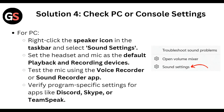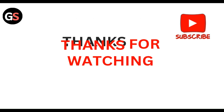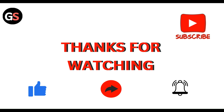Finally, check your PC and console settings. For PC, right-click on the speaker icon in the taskbar and select sound settings. Set the headset mic as the default playback and recording device, then test the mic using the Voice Recorder or Sound Recorder app. Also verify program-specific settings for apps like Discord, Skype, or TeamSpeak. That's all for this time — thanks everyone!